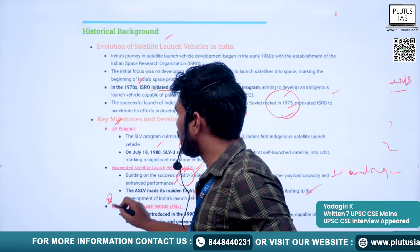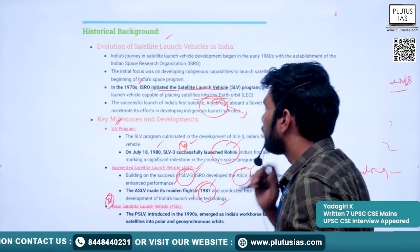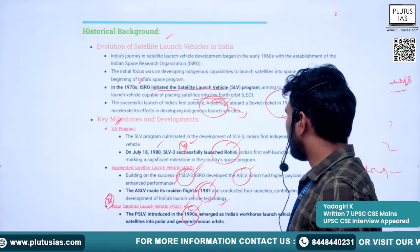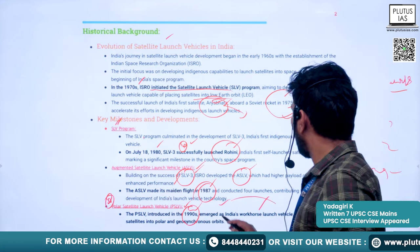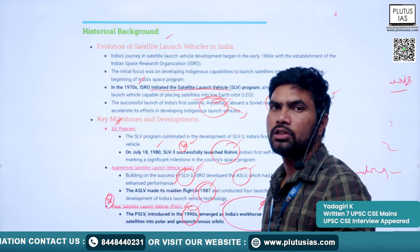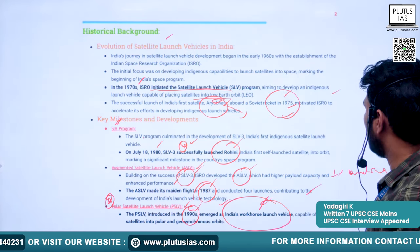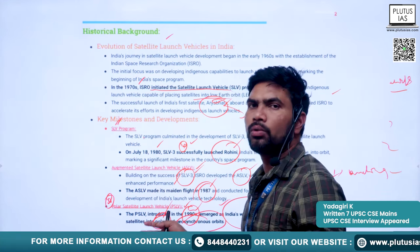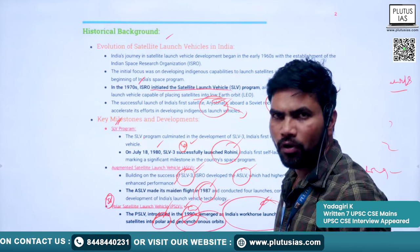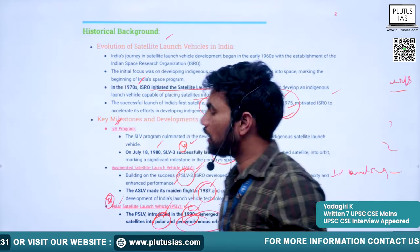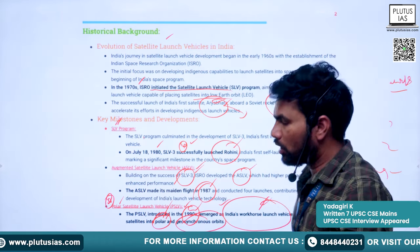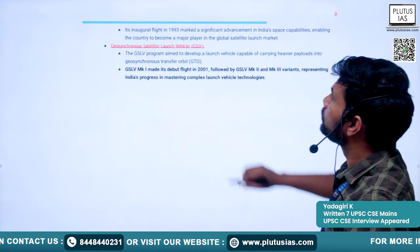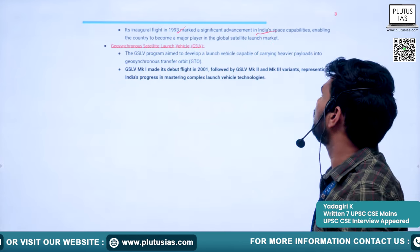Then came the most important and very reliable launch vehicle in India — the PSLV, the Polar Satellite Launch Vehicle. Inducted into India's launch vehicle program in the 1990s, it emerged as the workhorse of Indian launch vehicles. It has the capability of placing satellites into polar and geosynchronous orbits. Its inaugural flight was in 1993, marking a significant advancement.